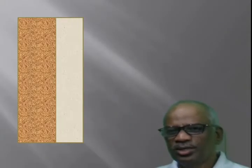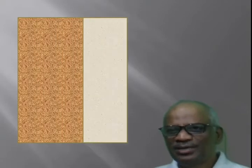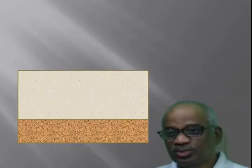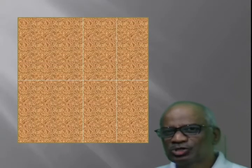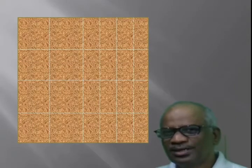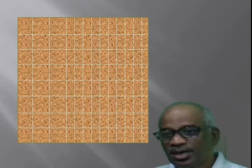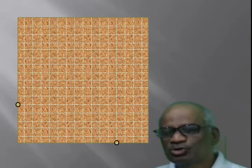We have learnt how to prove Pythagoras theorem through origami. Origami is an art of paper folding. There are many Pythagorean triplets. Using a 256 unit square grid, let's prove the Pythagorean triplet 5, 12 and 13. Try to prove another triplet 8, 15, 17 using the same square grid.